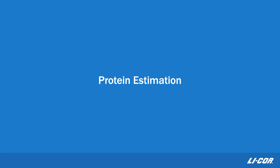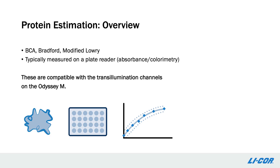Next, I'd like to show how Odyssey-M can be used in protein estimation assays. Protein estimation assays such as the BCA, Bradford, and Modified Lowry assays are essential tools for protein work, from cell lysates to purified proteins. These assays estimate protein concentration based on a colorimetric response and are typically done using the absorbance mode of a plate reader. Odyssey-M can be used for absorbance-based detection using several of the transillumination channels on the instrument.